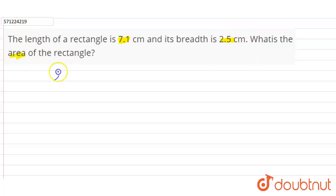Now in the question it is given the length is 7.1 centimeter and breadth is 2.5 centimeter. The formula for calculating the area of the rectangle is multiplication of length and breadth, so l times b. Now l is 7.1 centimeters, so 7.1 into breadth is 2.5 centimeter.